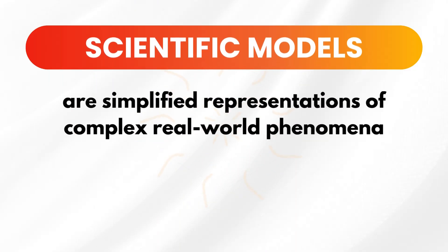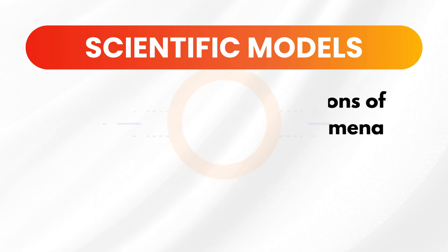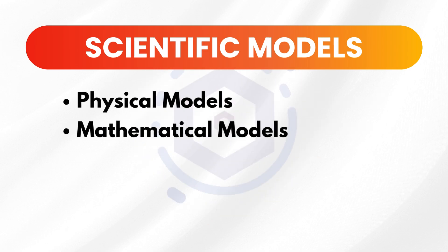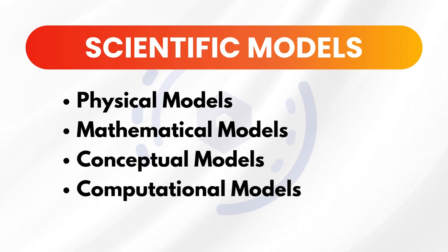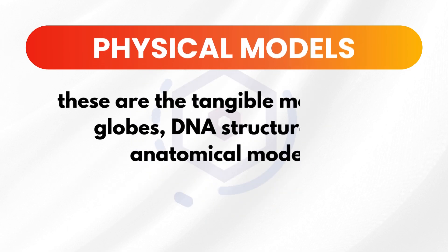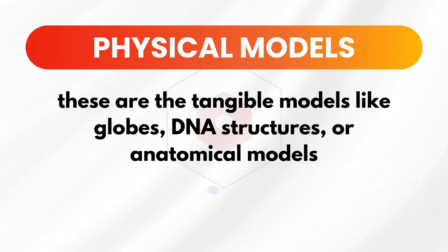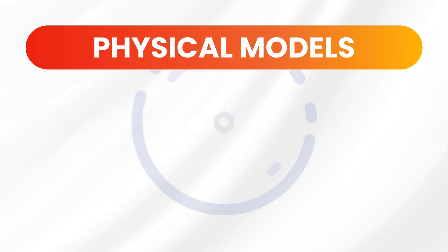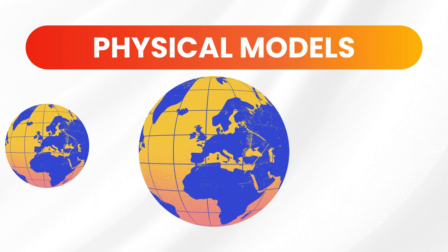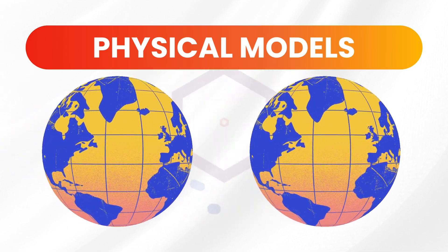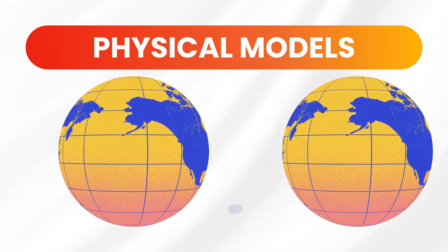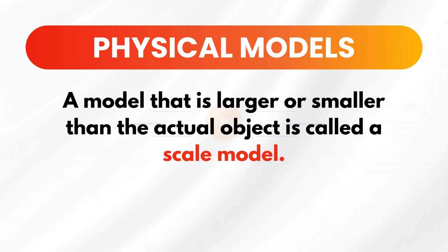Scientific models are simplified representations of complex real-world phenomena. They can take various forms such as physical, mathematical, conceptual, and computational. Physical models are tangible models like globes, DNA structures, or anatomical models. A physical model can be smaller, larger, or the same size as the actual object it represents. A model that is larger or smaller than the actual object is called a scale model.